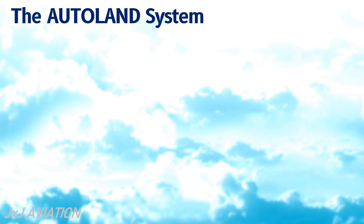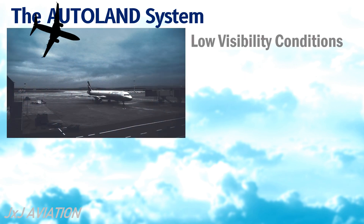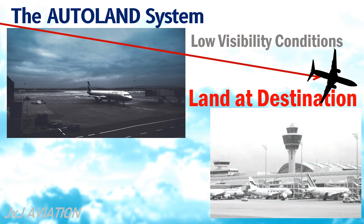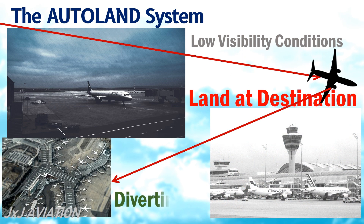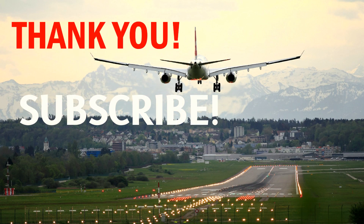Because of the Autoland system, even in low visibility conditions, aircraft are able to land at a particular destination instead of diverting to an alternate airport. Thank you for watching. If you liked the video, do subscribe, and you can continue watching some of my other videos as well.